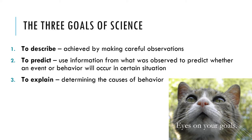The third and ultimate goal of science is to explain. This goal involves determining the causes of behavior. For example, researchers might try to understand the mechanisms through which marijuana reduces pain. Does marijuana reduce inflammation, which in turn reduces pain? Or does marijuana simply reduce the distress associated with pain rather than reducing pain itself? As you can see, these questions tap at the underlying mechanisms and causal relationships.